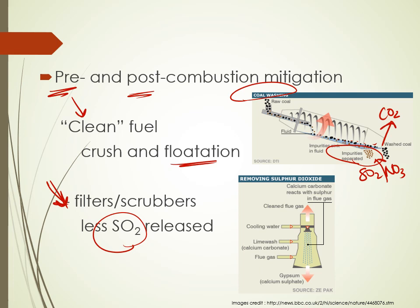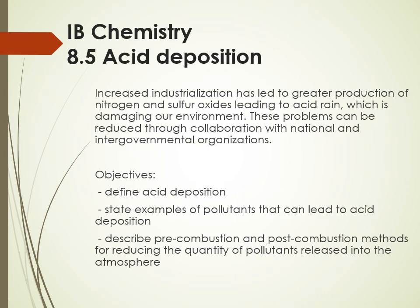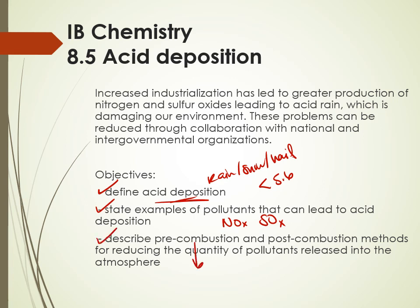We take those filters and scrubbers and dispose of them in a landfill — it's fine, we're fine, everything is fine — because we met all of our objectives. We defined acid deposition: acid rain, acid snow, acid hail — any precipitation with a pH lower than 5.6. That 5.6 comes from normal amounts of CO2. We talked about pollutants — nitrogen oxides and sulfur oxides — and described pre-combustion (clean the coal) and post-combustion (add a scrubber to your smokestack) methods for reducing pollutants released into the atmosphere.